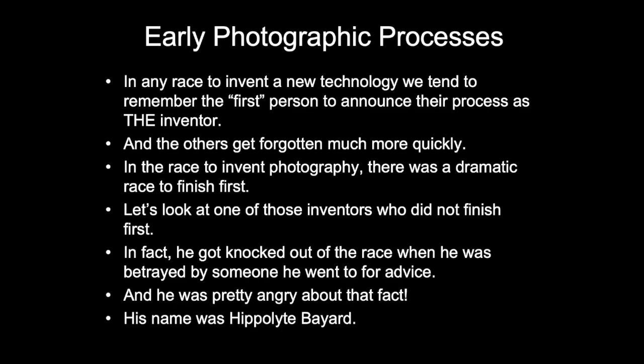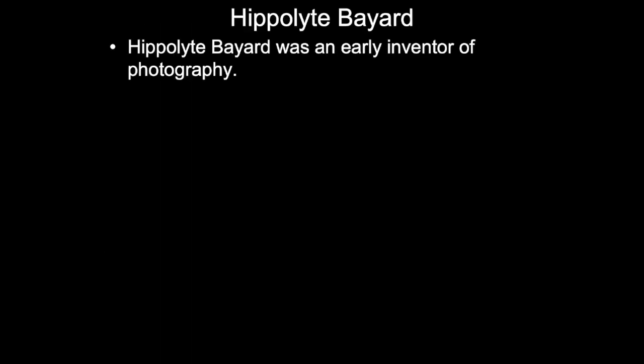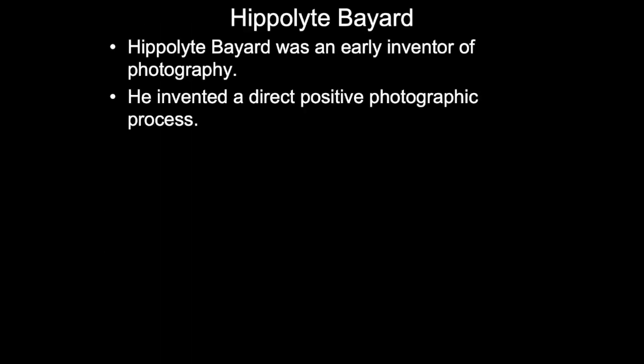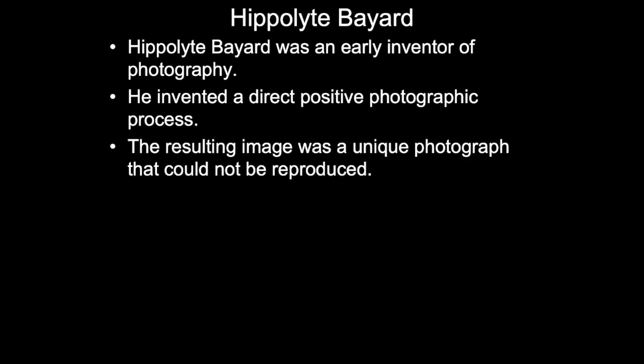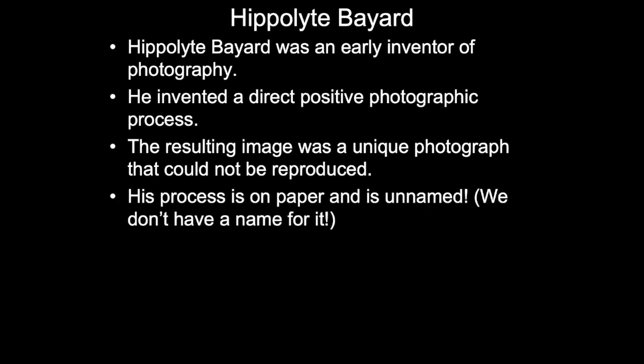His name was Hippolyte Bayard. He was an early inventor of photography who invented a direct positive photographic process. The resulting image was a unique photograph that could not be reproduced. His process was on paper and is unnamed — we don't really have a name for it, we just call it the direct positive process.